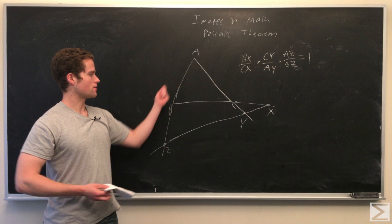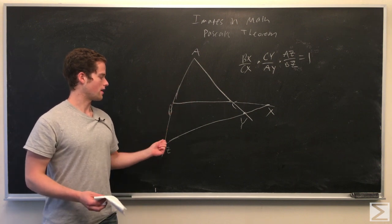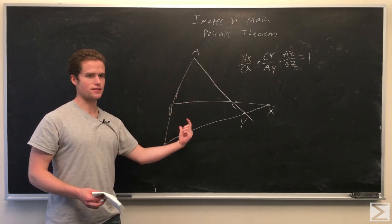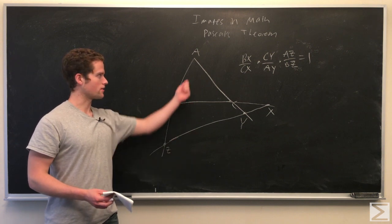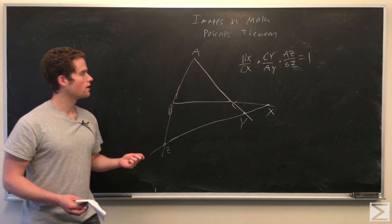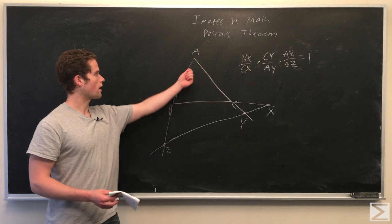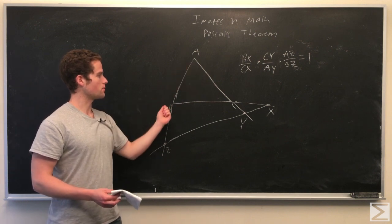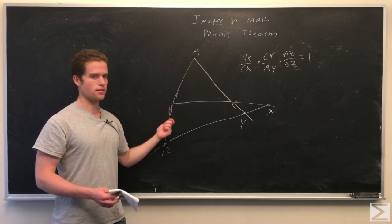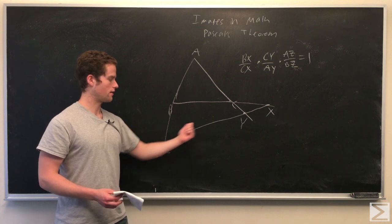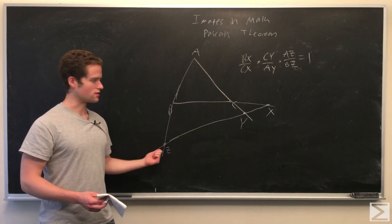Say we have a triangle ABC and a line ZYX that's not parallel to any of the sides of ABC. Extending the lines AB, BC and CA so that these lines intersect with our line, we label the points ZYX.